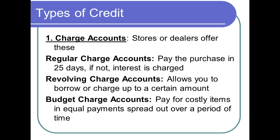Credit card bills pile up and we're unable to obtain new credit. Sometimes when the bills become too large, we run out of resources — we exhaust our ability to borrow because we borrowed way too much. Types of credit: charge accounts. Regular charge accounts pay the purchase in 25 days; if not, they charge you interest. Revolving charge accounts allow you to borrow or charge up to a certain amount — that's how credit cards work. You get a limit of, say, $10,000; as you spend, once you make your payment the limit revolves back up. Budget charge accounts pay for cost items in equal payments spread out over a period of time — kind of like a car payment.